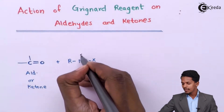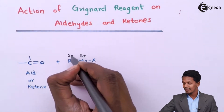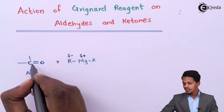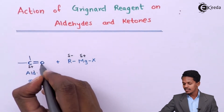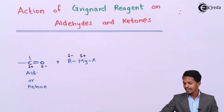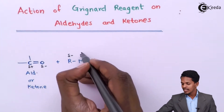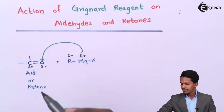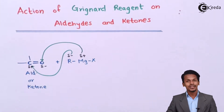Magnesium acquires a partially positive charge while the alkyl group acquires a partially negative charge, because magnesium is more electropositive. In the carbonyl group, the carbon acquires a partially positive charge while the oxygen acquires a partially negative charge. Therefore, the MgX group attaches to the oxygen atom and the R group attaches to the carbon atom.